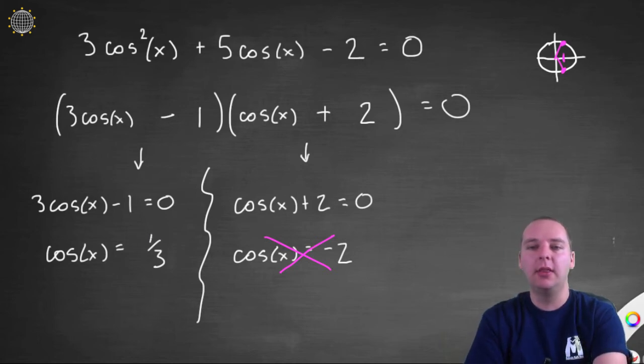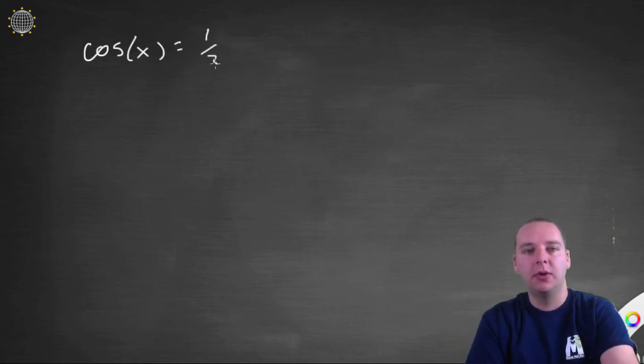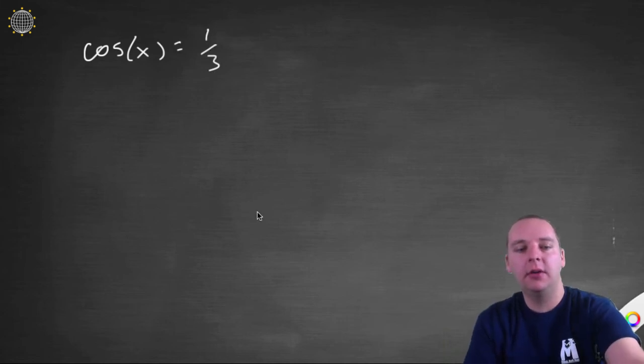So I think this would be a good time to go to our calculator and use that to help us figure out what the angle would be such that cosine of it would yield 1 third here. Okay. So let's jot this down on a separate page so we have some more space. Cosine of x equals 1 third.